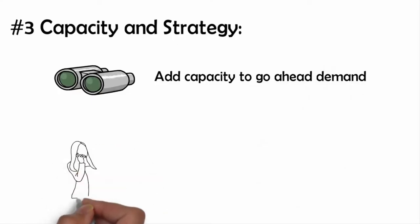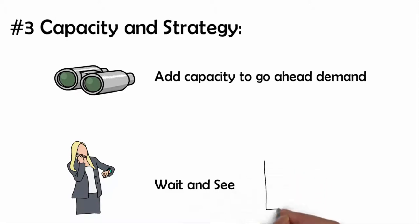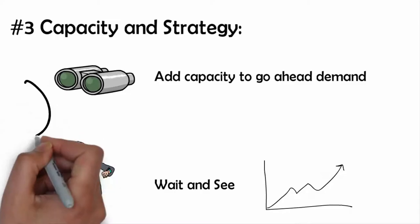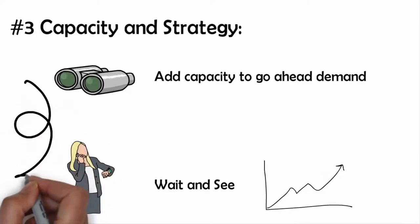Two: wait and see. This is a conservative strategy. It follows demand and expands in smaller increments. Some risk is we perhaps can be unable to respond to high demand. Management should choose between these two strategies or another in between.